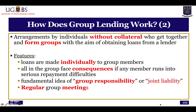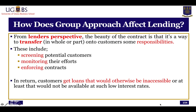Group lending works by allowing individuals who ordinarily don't have collateral to get together and form groups with the aim of getting a loan. The loans are made individually to the group members; however, everybody within that group is responsible for the repayment of an individual's loan. This means they have a group responsibility and joint liability, and for that reason they must hold regular group meetings to follow up on anything happening within the group.